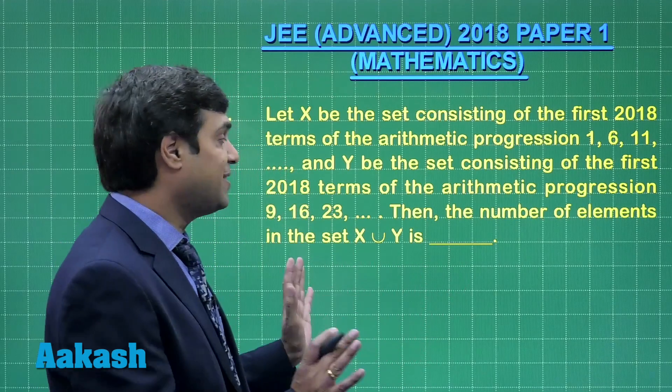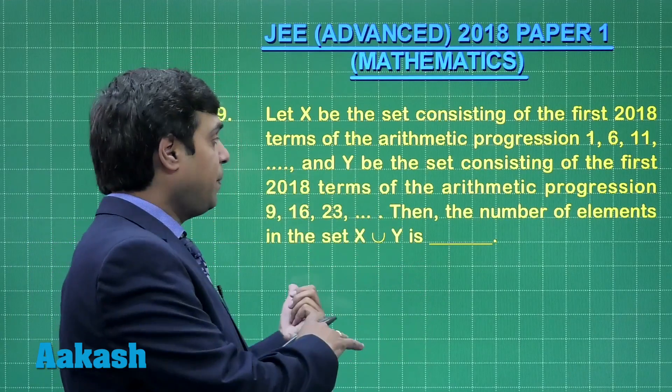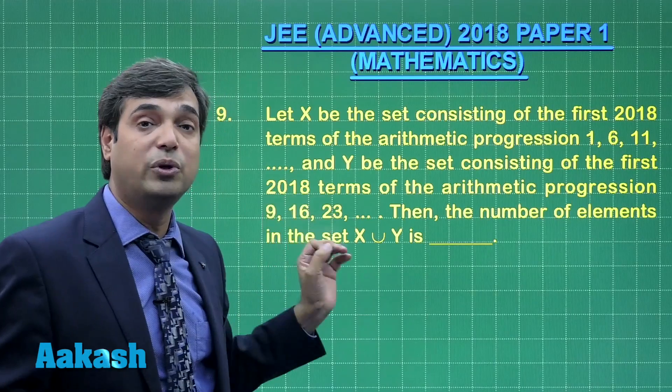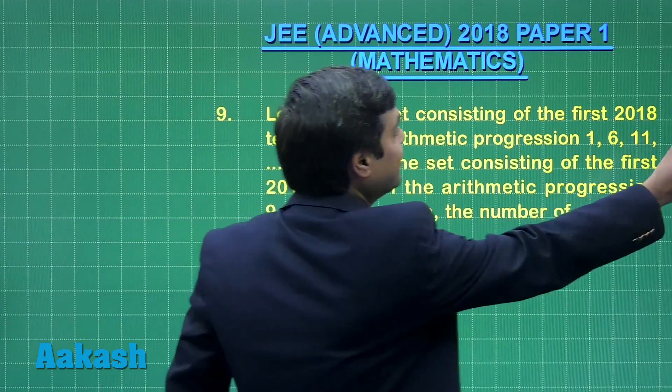So, two APs are given. First we have to find another AP which is formed by taking common terms of two different APs. So, let us start this question.